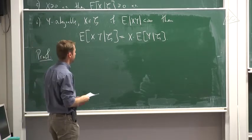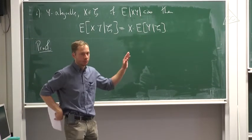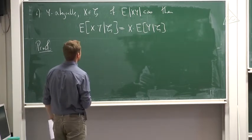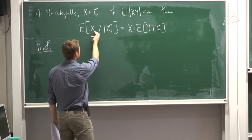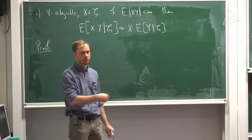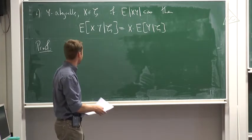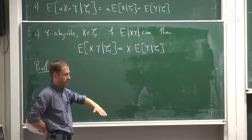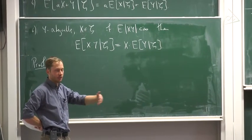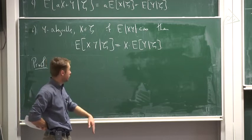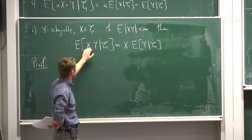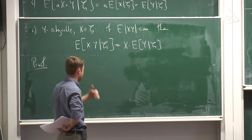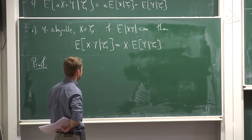Proof. This proof is a bit more complicated but also instructive. We prove this result in several steps. First we consider X to be an indicator function of some event. Then we take X to be a simple function, which is a linear combination of indicators. Afterwards, we use the fact that every random variable can be approximated by simple functions, and we pass to the limit.